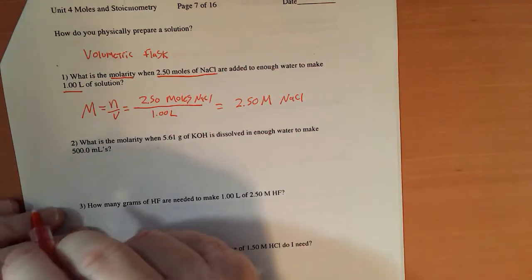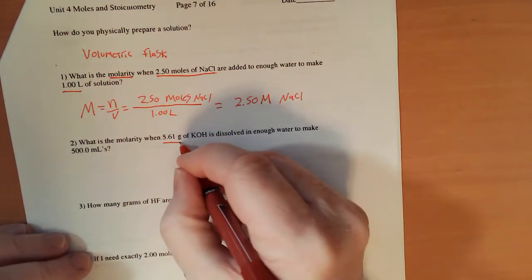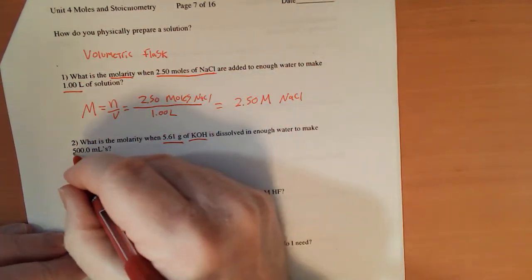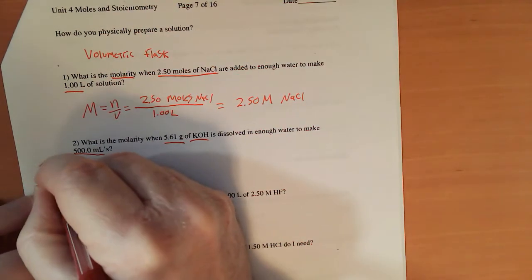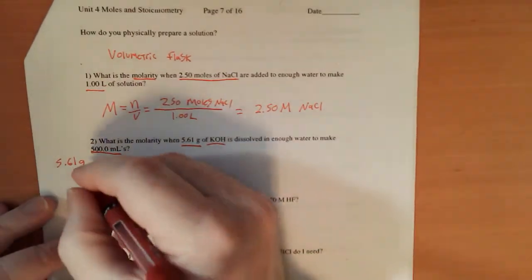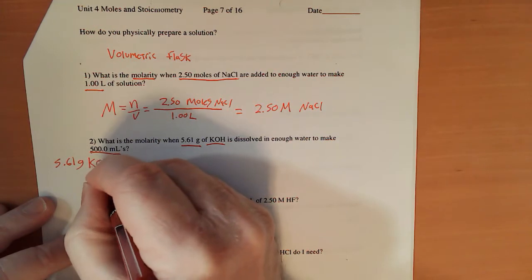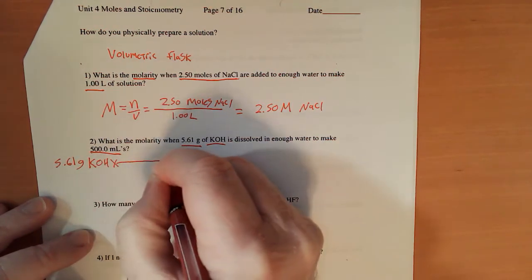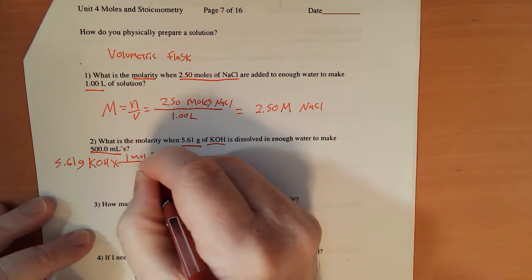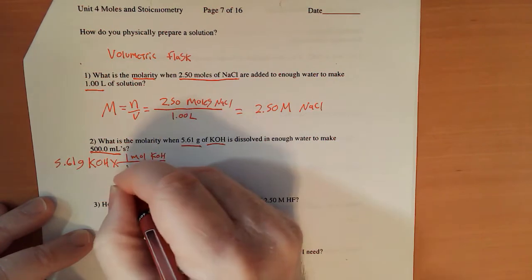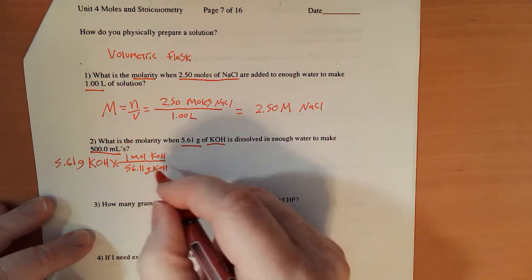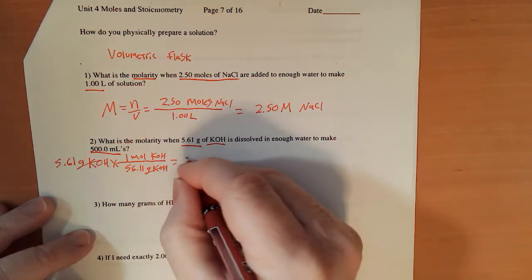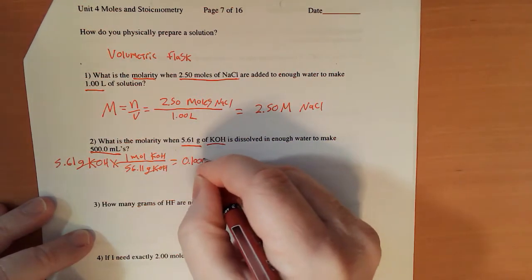So more commonly, we would actually work with a mass and a volume, so we have to do some conversions here. I have 5.61 grams of KOH. To convert it to moles, I go 1 mole of KOH. I added up its molar mass. It's 56.11 grams of KOH. Those cancel, and this equals 0.100 moles KOH.